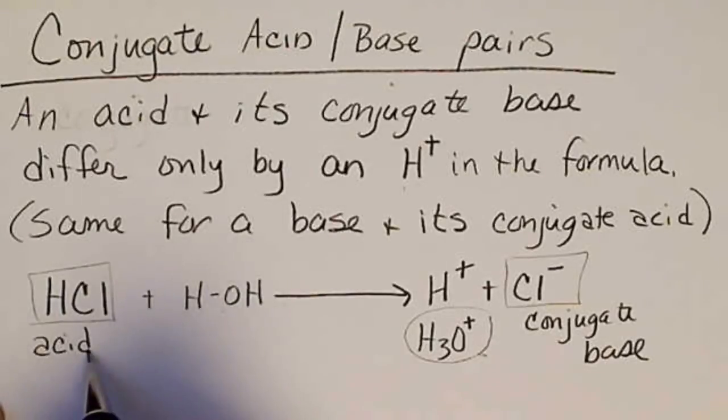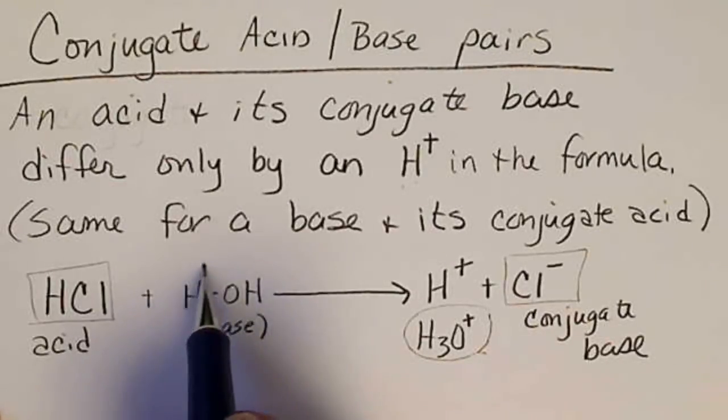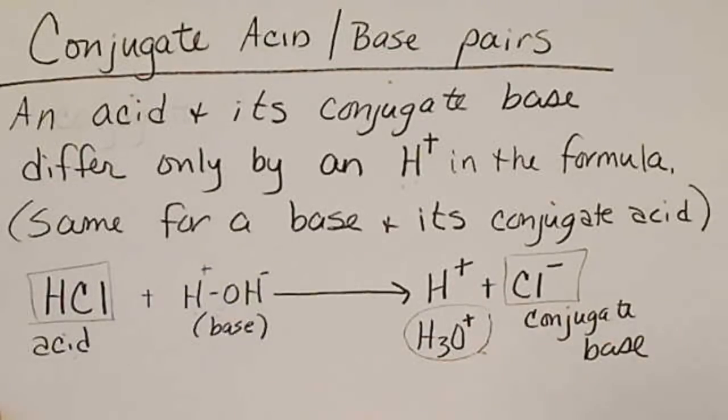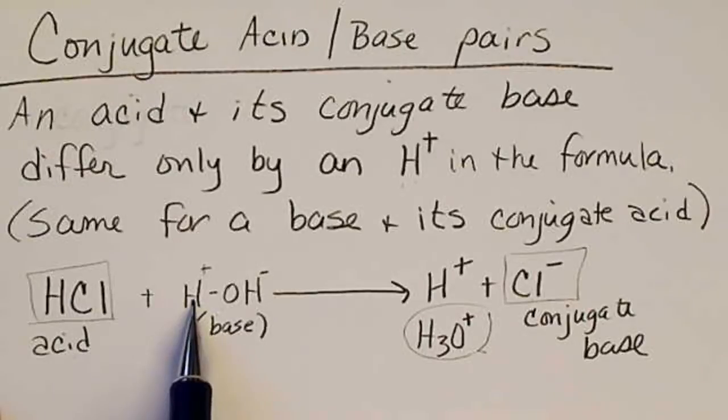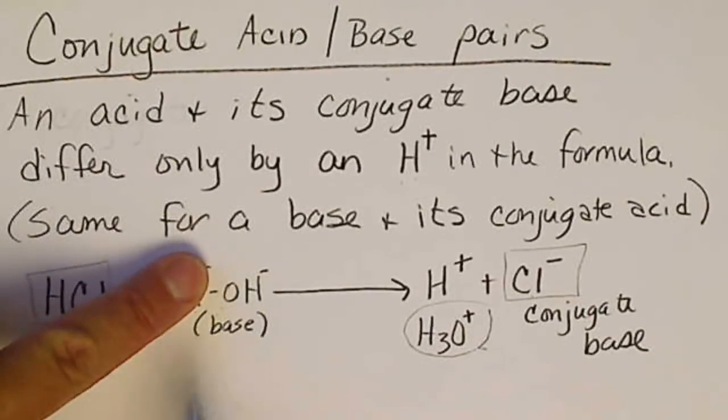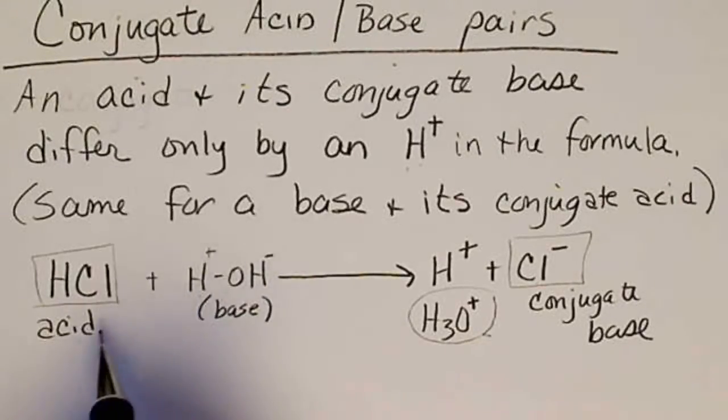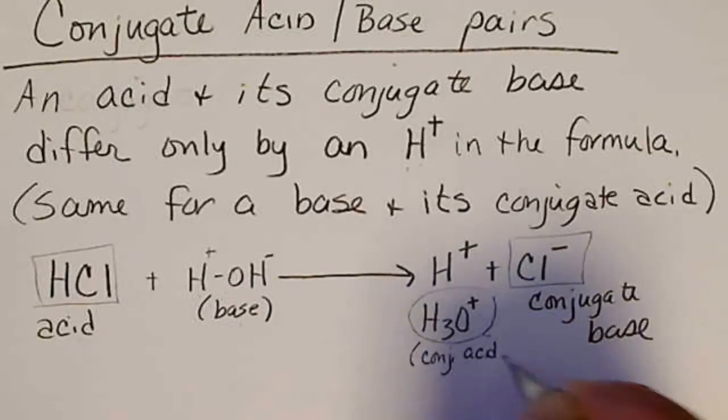When water is with an acid, it acts like a base. So we're going to see, and I wrote water like this, water has an H+ component and an OH- component. So water is very unique in that it can donate a proton and act like an acid, or it can donate an OH- and act like a base. But in this case, when water is with an acid, it acts like a base. So this is the conjugate acid of water.